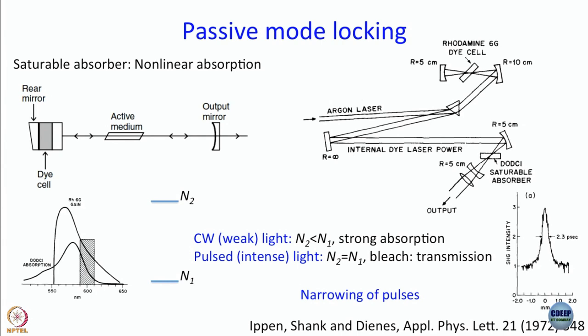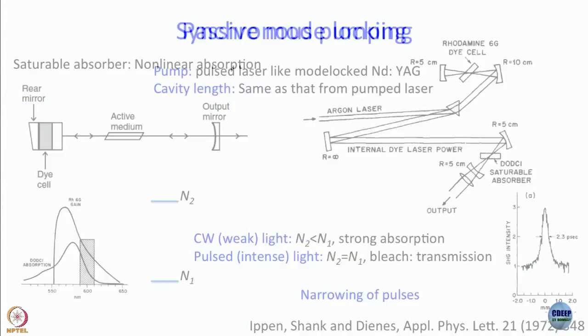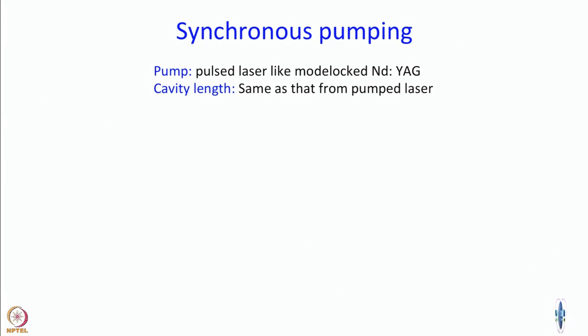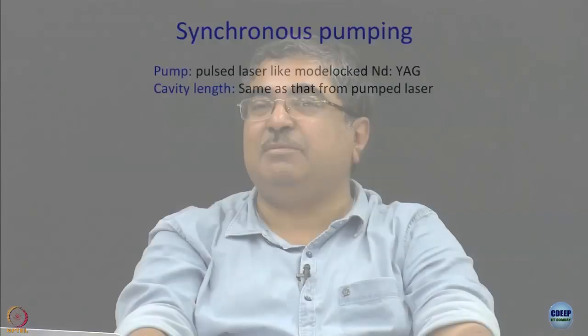What I want to say is that a saturable absorber works even better if it is not given the work of producing pulses as such, but pulses are produced already and the only job of the saturable absorber is to narrow the pulses down. That is achieved very commonly in dye lasers especially, and also in some kinds of solid state lasers, by what is called synchronous pumping.